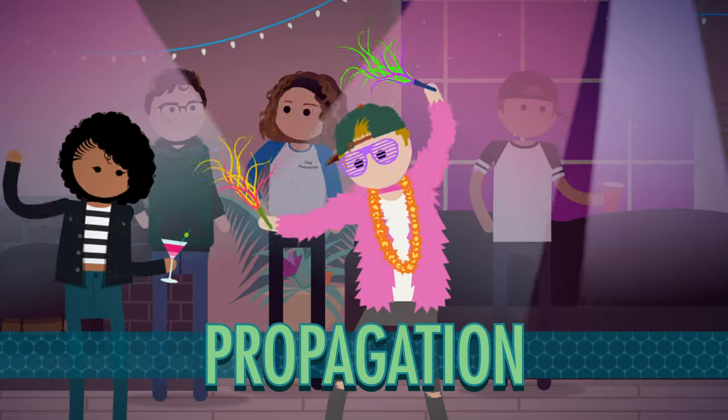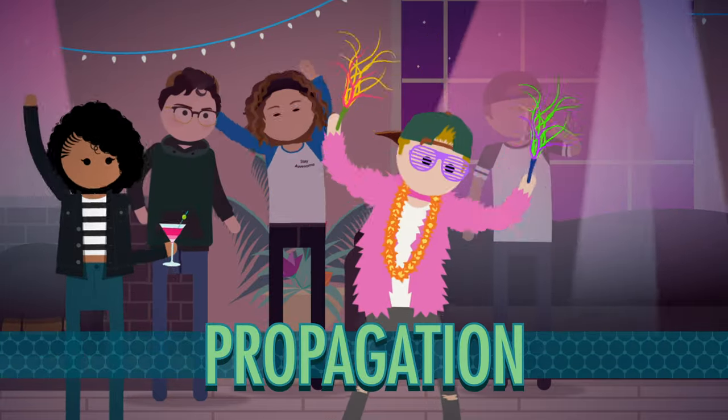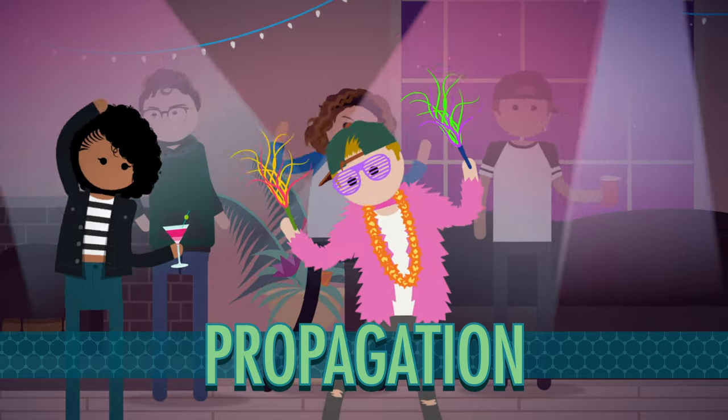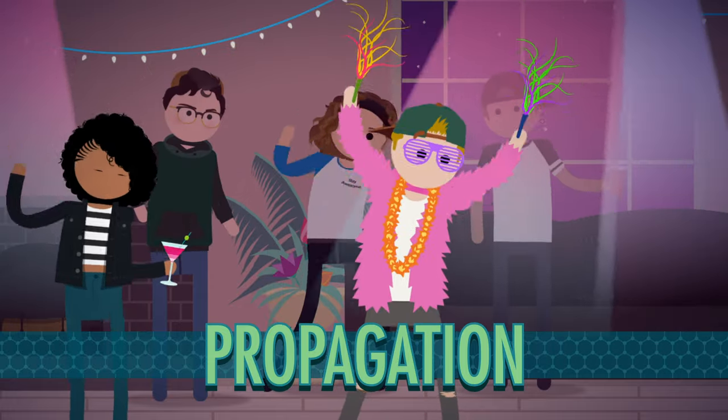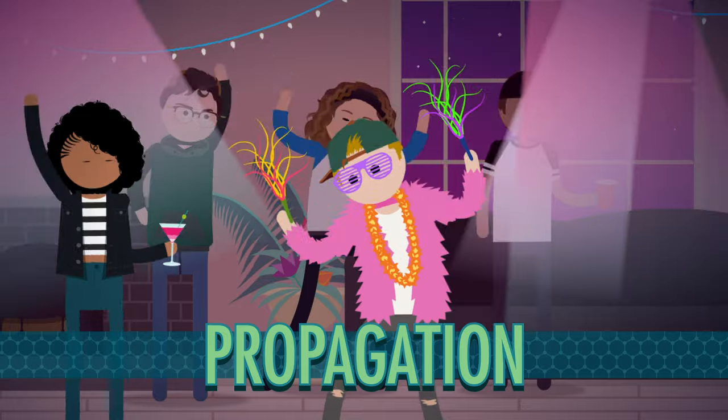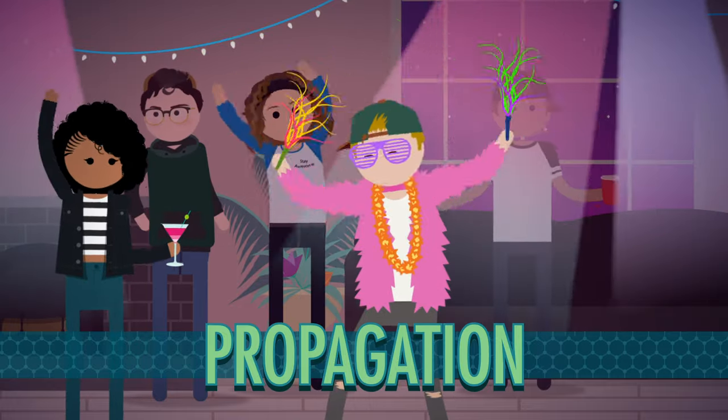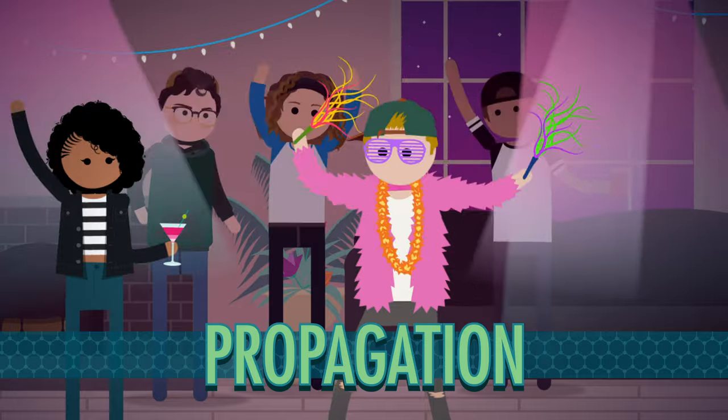Propagation is where a few radicals bounce around, reacting with other molecules. It's the step that keeps people on the dance floor, but it's sort of important to limit the number of high-energy guests so things don't get too rowdy. Importantly, propagation also regenerates the reactive radical we made in the initiation step.